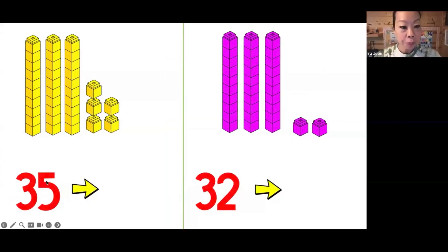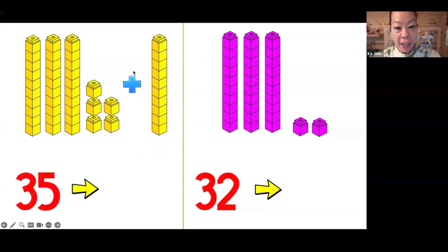10 more, 10 less. We're gonna first use our place value blocks so that you guys can see why and how the numbers increase or decrease. Here you see we have 35 blocks. If I add 10 more, my number here, 35, is going to change to 45.